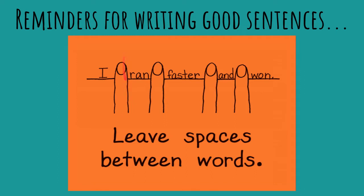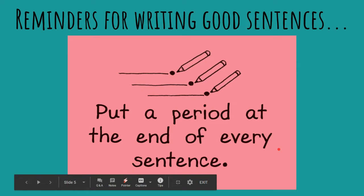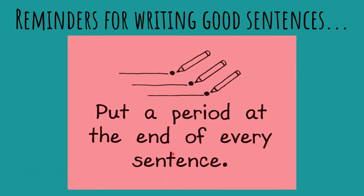Sometimes I like to use another pencil, or a little marker, or a popsicle stick — you can use whatever you want to help remind you to put a space between each word. Another reminder for writing good sentences is to write a letter for each sound. So for each sound you hear when you're trying to write a word, you just try your best, stretch out all those sounds, and write a letter for every sound that you hear. For example, that word is 'ran' — as you're stretching your sounds, make sure you write a letter for each sound. Those are green words. And then the last reminder is to put a period at the end of every sentence, so we know when to stop, pause, take a breath, and go to the next sentence. So every time you have an idea, write your idea. When you're done with the idea — period punch and go to the next sentence.